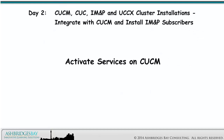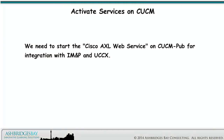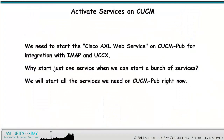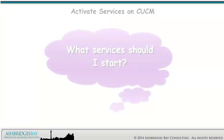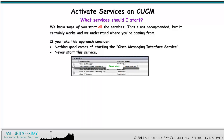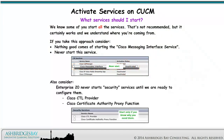Now we need to activate services on the CUCM for the IM&P integration. We need to start the Cisco AXL Web Service on CUCMPub for integration with IM&P and UCCX. Rather than start just one service, we will start all the services we need on CUCMPub right now. Starting all services is not recommended, though it works. Note: nothing good comes of starting the Cisco Messaging Interface service — never start this service. Also, Enterprise 20 never starts security services like Cisco CTL Provider and Cisco Certificate Authority Proxy Function until we are ready to configure them.